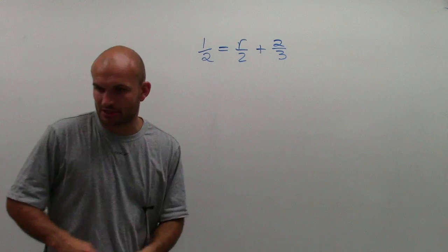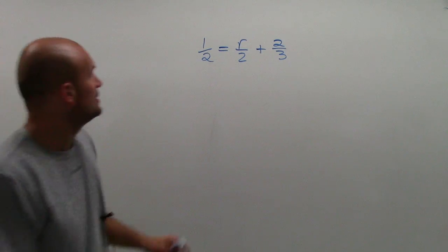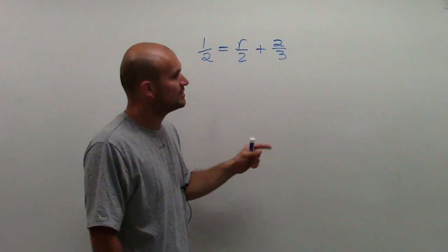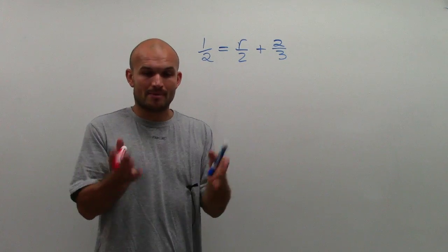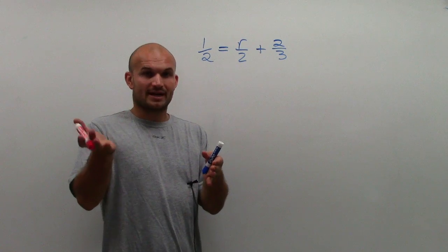So to get rid of these fractions, I'm going to grab a different marker here. To get rid of the fractions, what we can do is we can multiply them by a common denominator. Remember, or sorry, a common multiple.